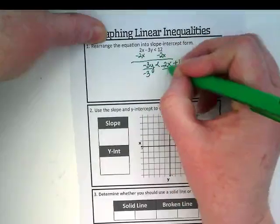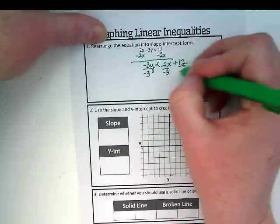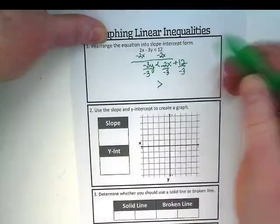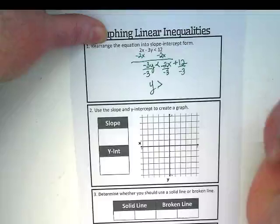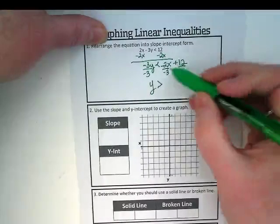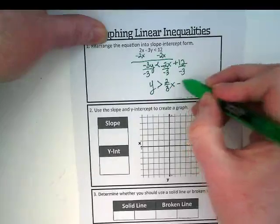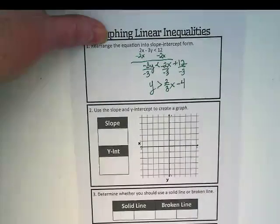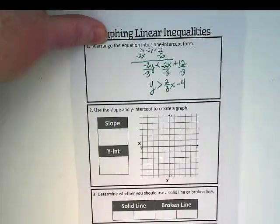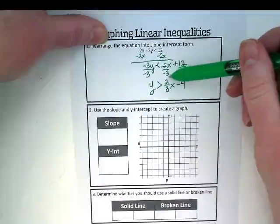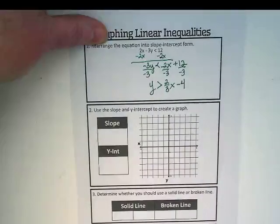It's an inequality, so what happens when I divide by a negative? The sign flips. We now have y is greater than 2 thirds x minus 4. Why is the 2 thirds positive? Because the 2 was negative and the 3 was negative, so those divide out. And we end up with 12 divided by negative 3 gives us negative 4.